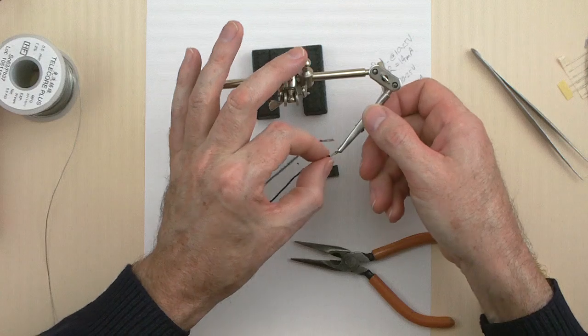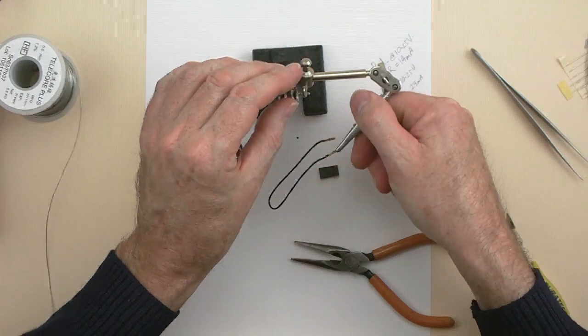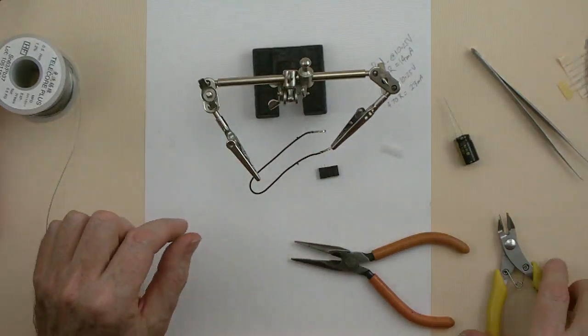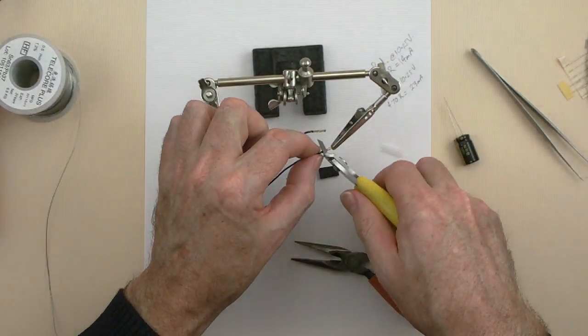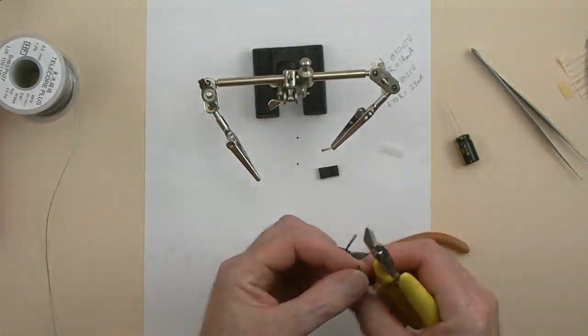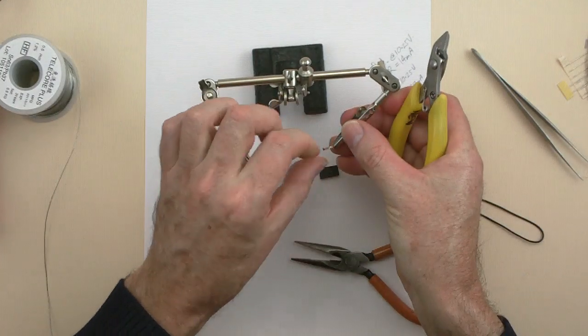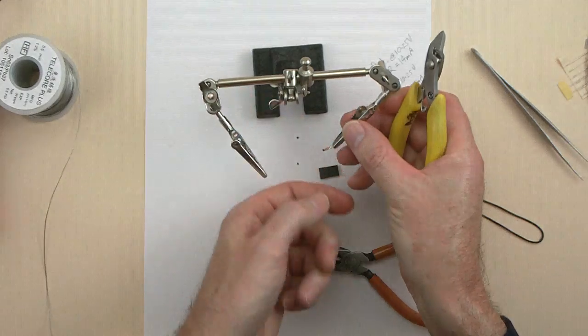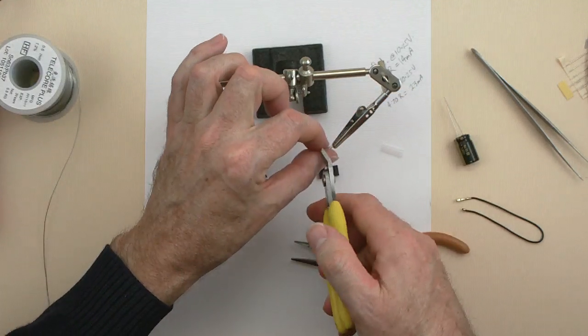So we've got the connector there. Turn that around so it's horizontal. We don't want the lead anymore. So I'm going to cut that off right behind the plastic part of the clamp. Get rid of the plastic off the end of the wire.